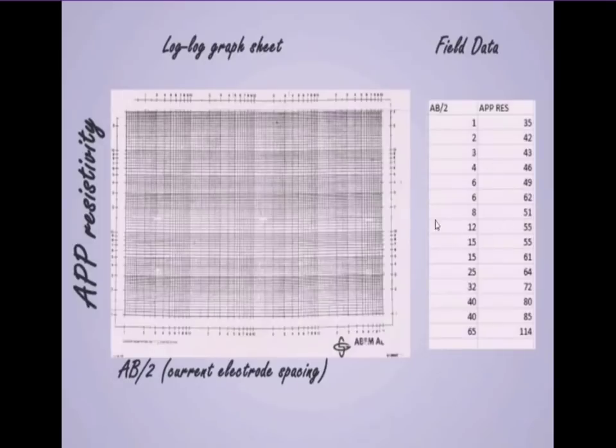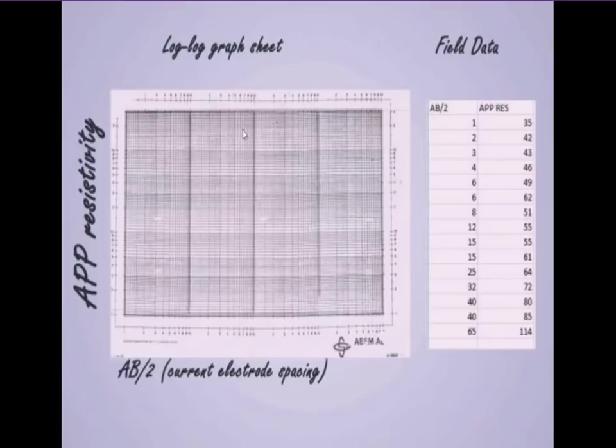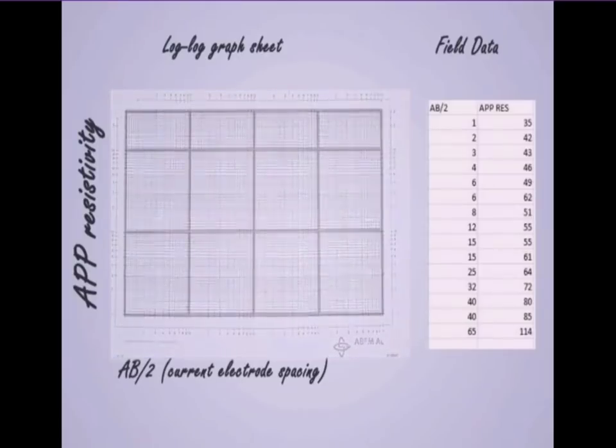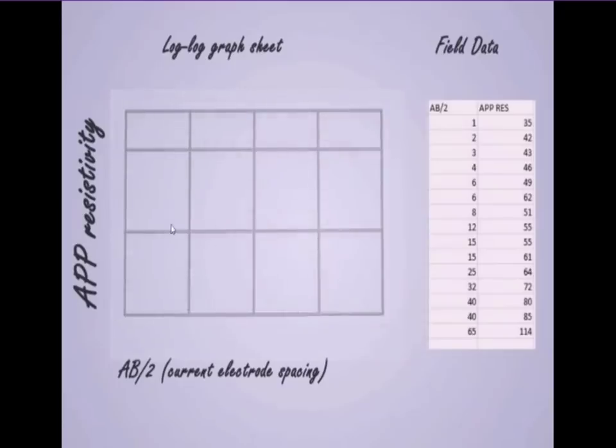The field data I will be working with is as shown on the right hand side of the screen. Bring your transparent sheet, place it gently on the log log graph sheet and rule out the border as shown. Be careful about ruling your border. And then take off your log log sheet in order to view your transparent sheet properly.